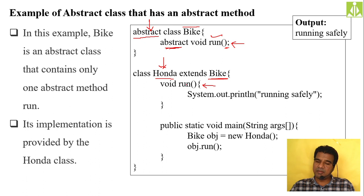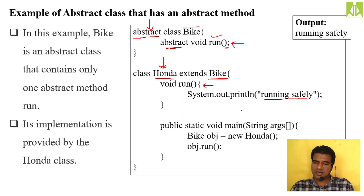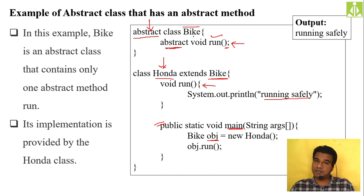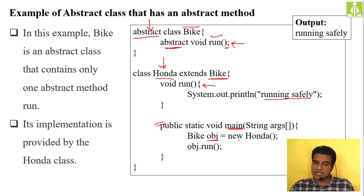Inside Honda I implement the run method — giving the body with a message 'running safely'. Then I have a main method where I create the object of bike class. The bike class is abstract so it cannot be instantiated, but I use it as a reference. bike bObj equals new Honda() — using the Honda class constructor to instantiate.